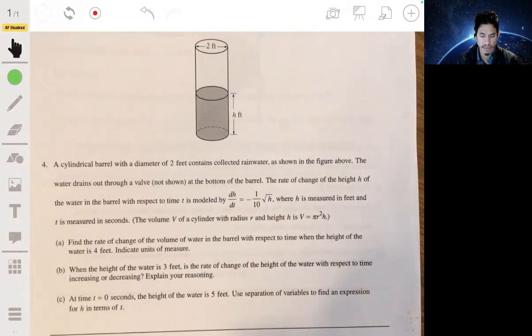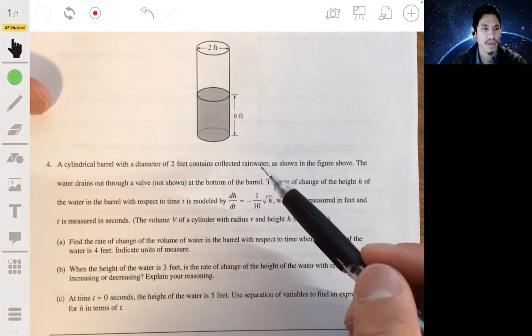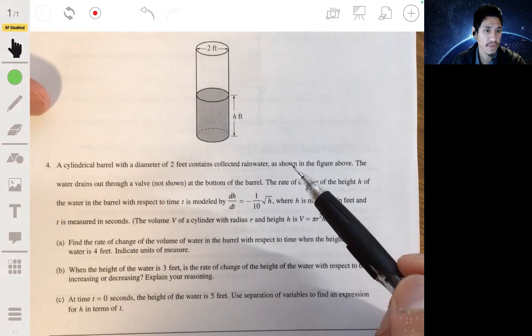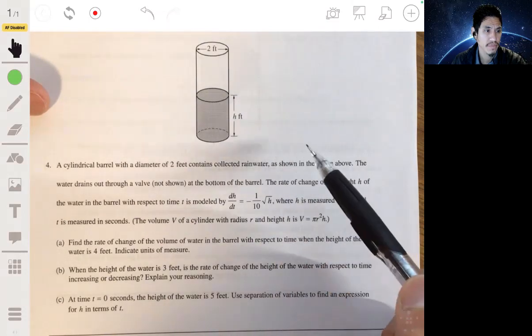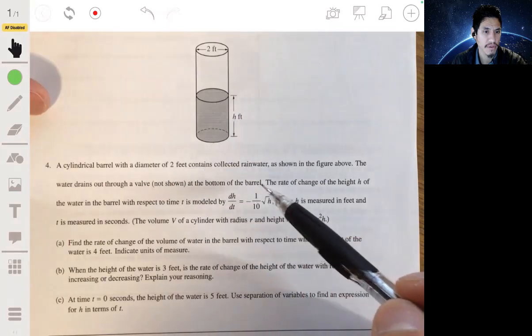All right, problem four. We got a cylindrical barrel with a diameter of two feet and it contains collected rainwater. And it's shown here, the water drains out of the valve, it's not shown at the bottom of the barrel.